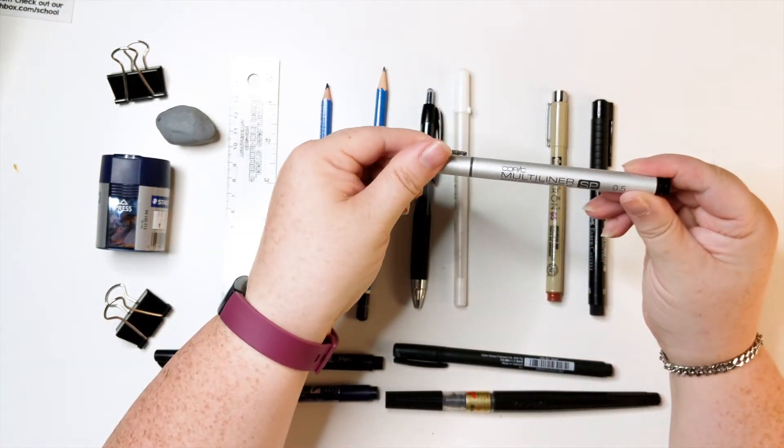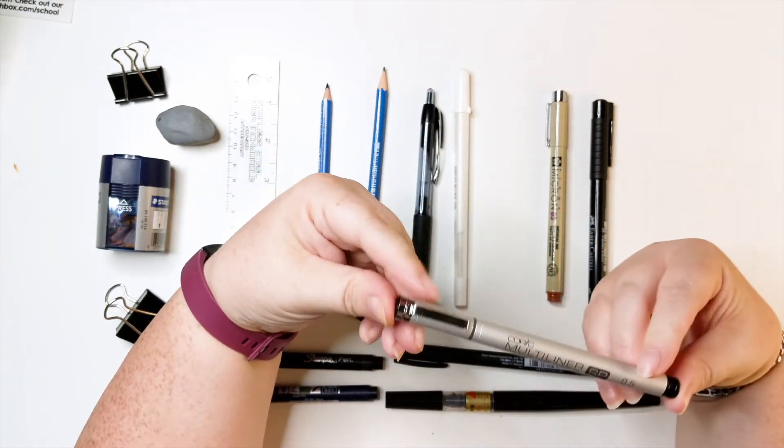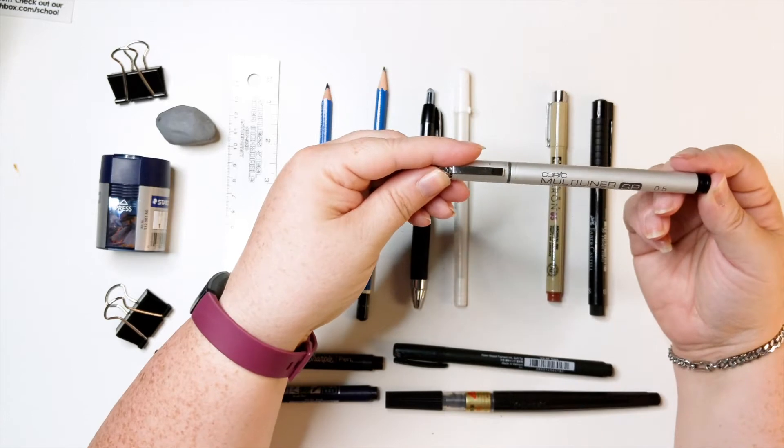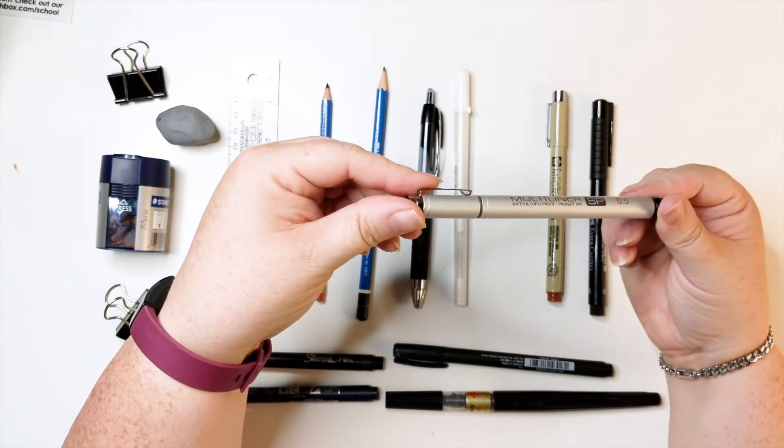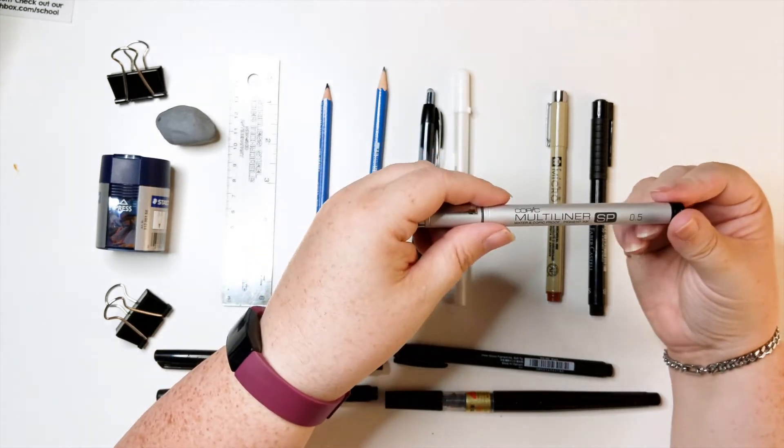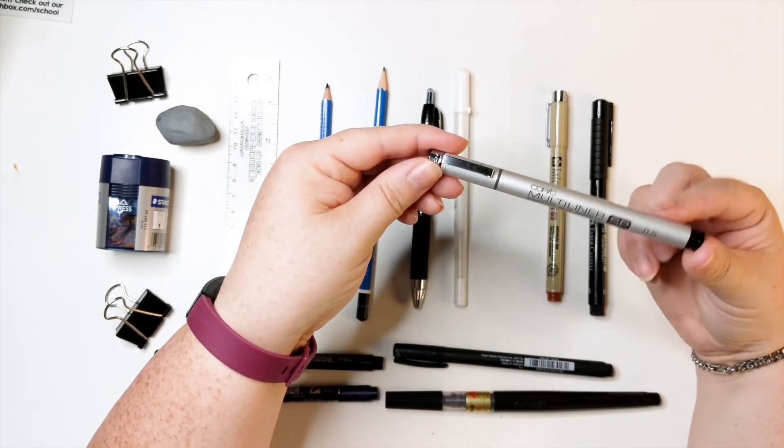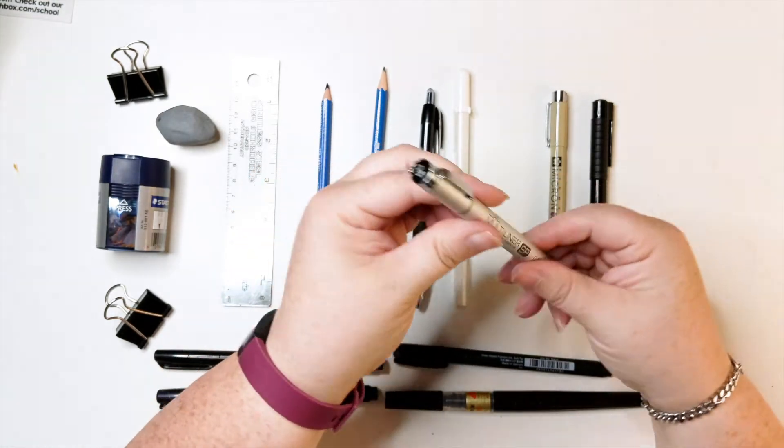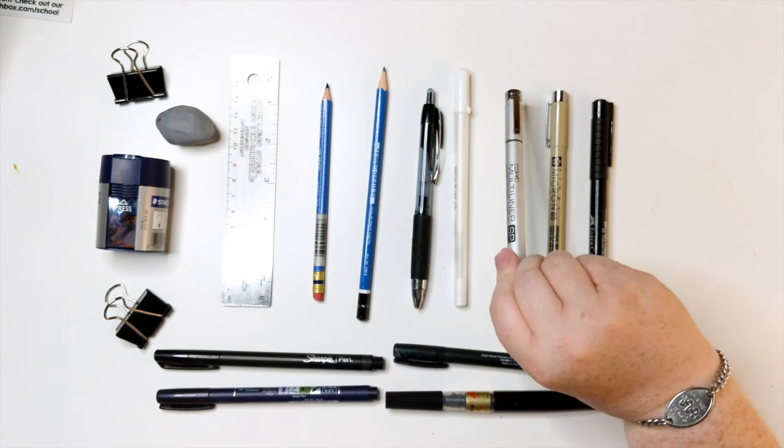This is a Copic Multiliner in a 0.5. I really, really like these. I was using Sharpie markers and Pigma Microns, but I do find these are really nice and they're refillable. So, yeah, I might look into getting a set of those.